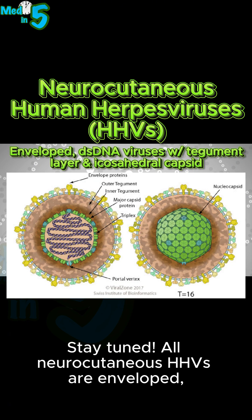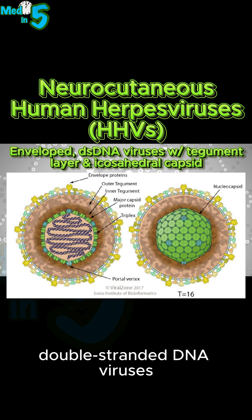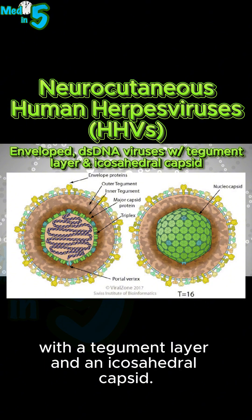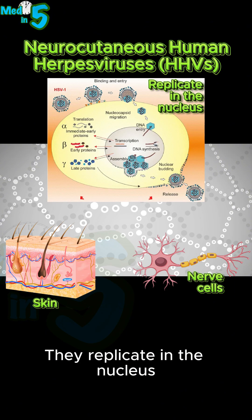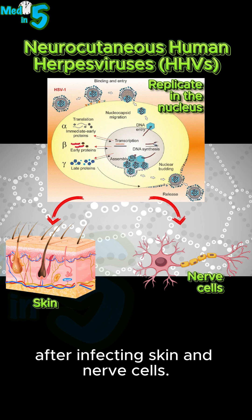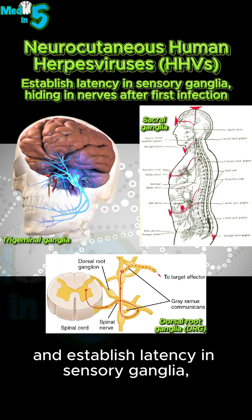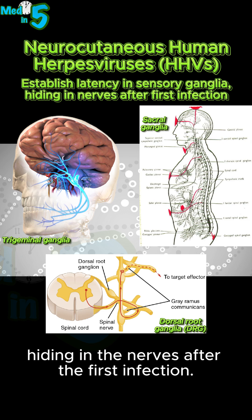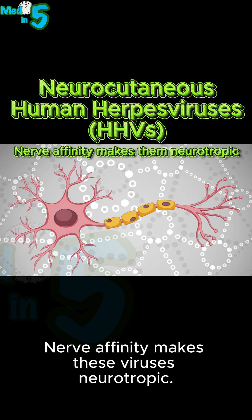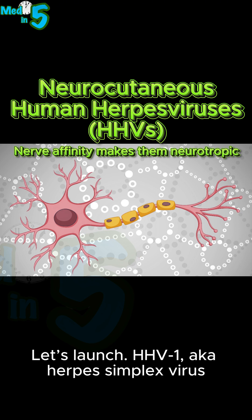All neurocutaneous HHVs are enveloped, double-stranded DNA viruses with a tegument layer and an icosahedral capsid. They replicate in the nucleus after infecting skin and nerve cells. They cause vesicular lesions and establish latency in sensory ganglia, hiding in the nerves after the first infection. Nerve affinity makes these viruses neurotropic.